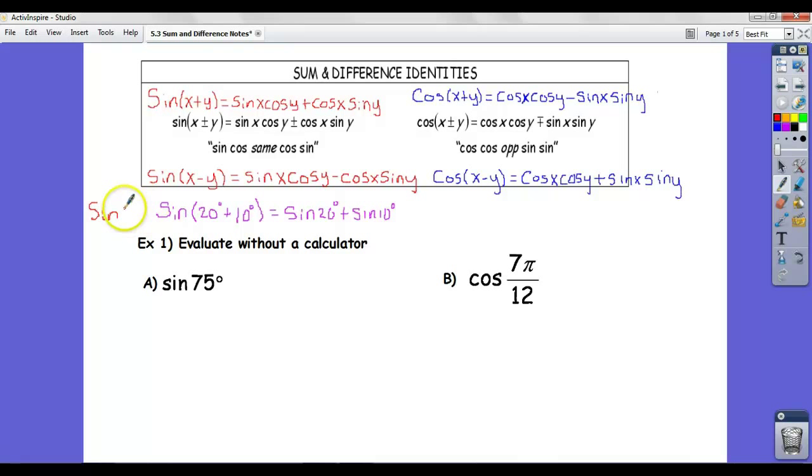Just notice that this is sine of 30 degrees, right? If you just add those two numbers, sine of 30 degrees we know is one half. And if you do this on your calculator, sine of 20 plus sine of 10, you definitely won't get one half. The big picture is in life we like things to be simple and work out nicely, but they don't always do. So that's not true.